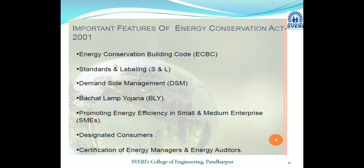The act also aims to demonstrate BEE delivery systems through public-private partnerships to promote energy efficiency in the country. Key features of the Energy Conservation Act 2001 include energy conservation building codes for new buildings, standards and labeling for all equipment, demand-side management, and promoting energy efficiency in small and medium enterprises.